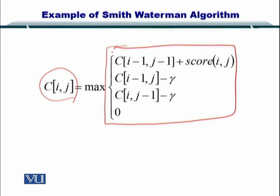If you remember in the Needleman-Wunsch algorithm, you only had the first three, but in the Smith-Waterman algorithm you introduced a zero here as well.